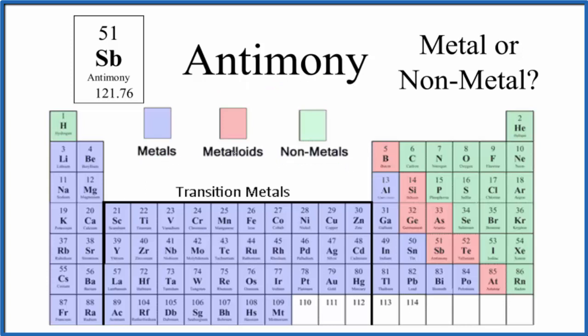So we have our periodic table divided into metals, metalloids, and nonmetals. The metals here, they're over here on the left, with the exception of hydrogen. Hydrogen is a nonmetal.